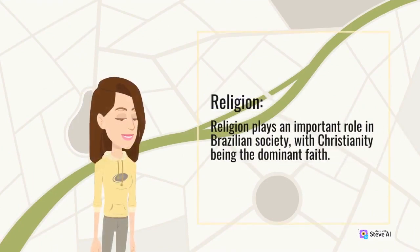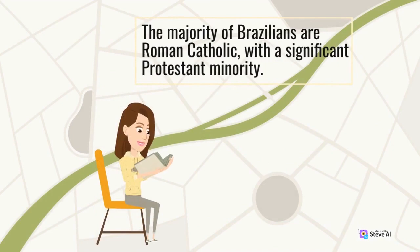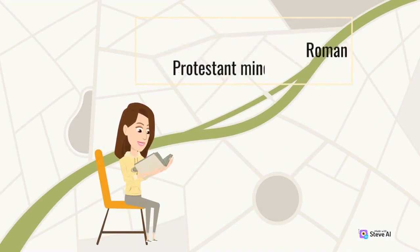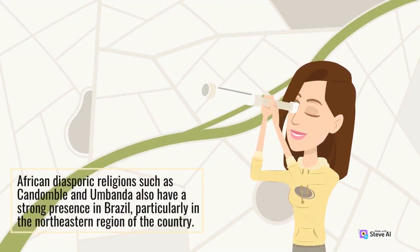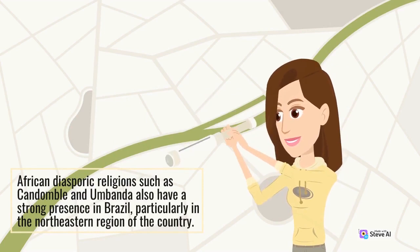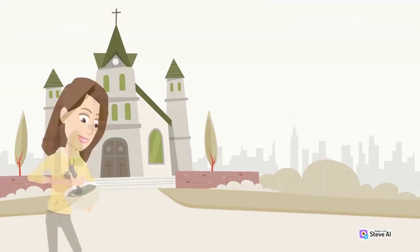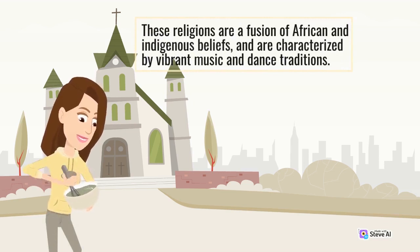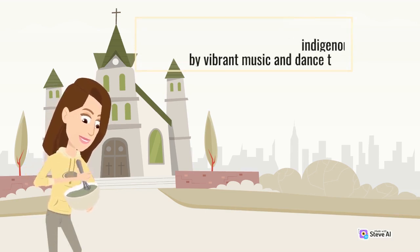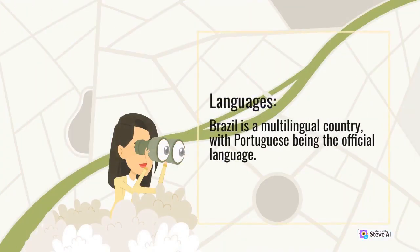Religion plays an important role in Brazilian society, with Christianity being the dominant faith. The majority of Brazilians are Roman Catholic, with a significant Protestant minority. African diasporic religions such as Candomblé and Umbanda also have a strong presence in Brazil, particularly in the northeastern region. These religions are a fusion of African and indigenous beliefs, and are characterized by vibrant music and dance traditions. Brazil is a multilingual country, with Portuguese being the official language.